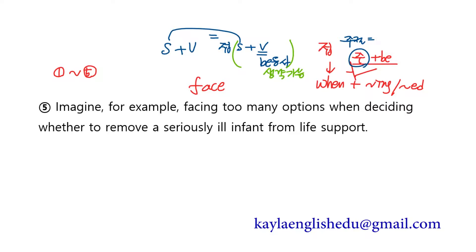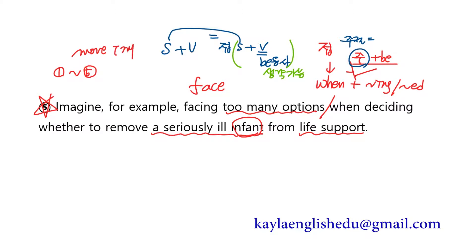When deciding — 무엇을 결정할 때냐면 whether to remove — seriously ill한 어린 아이를 제거할지 말지를 결정해야 할 때 — life support(생명유지장치)로부터. 아이가 너무 아파서 생명유지장치에 연결되어 있는데 그것을 제거할지 말지 결정해야 할 때 너무 많은 선택사항을 직면하는 것을 상상해봐. 그래서 답은 5번이 맞아요 — more important 더 중요한 사항에서는 funny하지 않다는 example이 들어온 거예요.